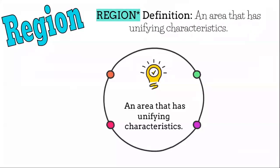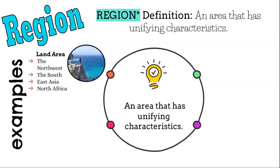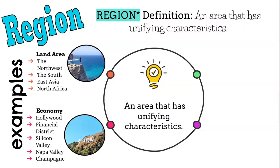The fifth theme is region. Region's definition is an area that has unifying characteristics. This is often tricky because there's no clear border — for example, what's the border between Northern California and Southern California, or between the Arab world and the non-Arab world? You can define a region by land areas: the South, East Asia, North Africa, the Northwest. But it's semi-debatable — some states might say they're in the Appalachian area rather than the South. A region is a territory with characteristics that unify people, but without clear borders.